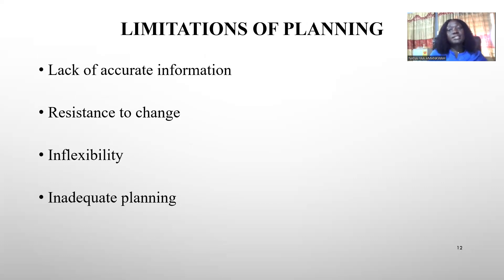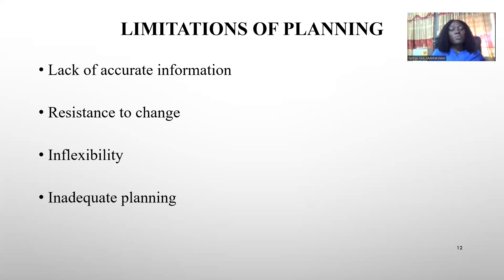These are the limitations of planning. Lack of accurate information makes it difficult to plan when you don't have the needed information. Resistance to change — when people in the organization resist new plans, it limits planning. Inflexibility — when the organization is not dynamic or ready to learn new things. Inadequate planning is also a limitation, as the saying goes: when you fail to plan, you plan to fail. So whenever there's inadequate planning, it limits planning as a whole.